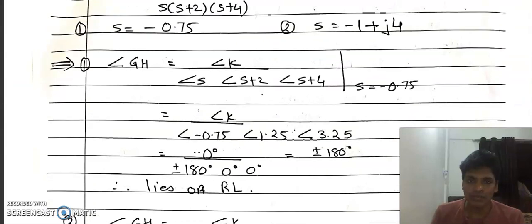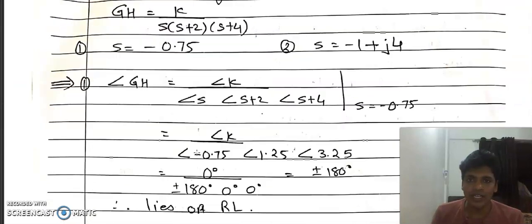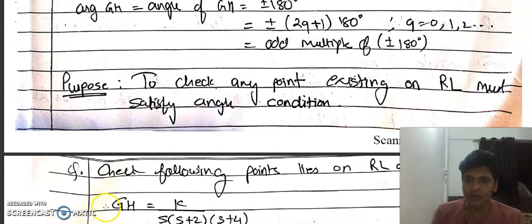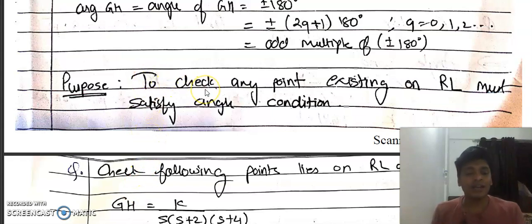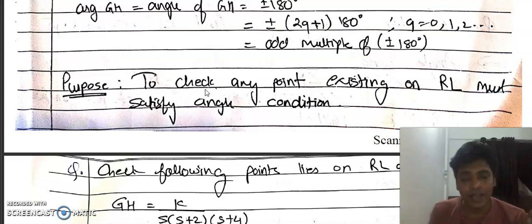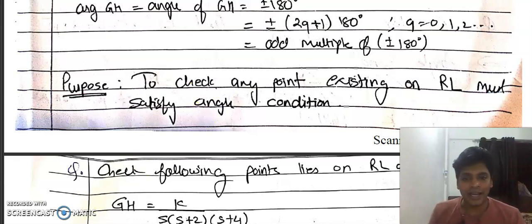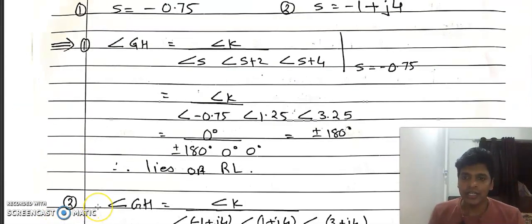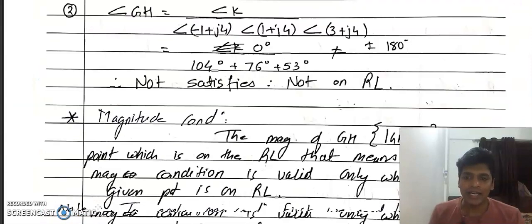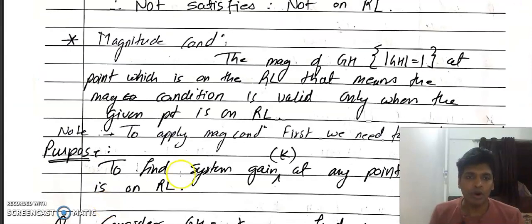We have seen a question where we calculated the angle of GH. The purpose of finding the angle is to check whether a point lies on the root locus or not. The second condition is the magnitude condition: mod of GH is equal to 1.